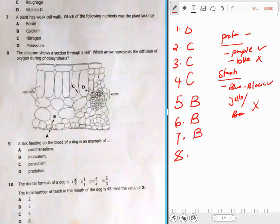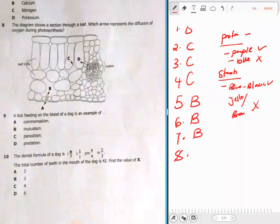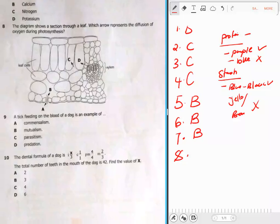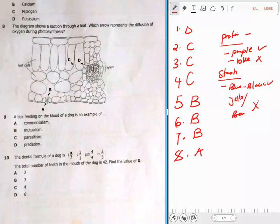Question 8: The diagram shows a section through a leaf. Which arrow represents the diffusion of oxygen during photosynthesis? Now during photosynthesis, does oxygen go out or go in? Oxygen comes out. So our answer is A. Oxygen comes out because carbon dioxide is needed for photosynthesis. That's why the arrow going in there is for carbon dioxide.